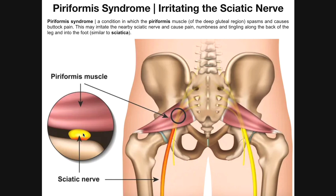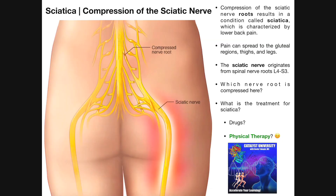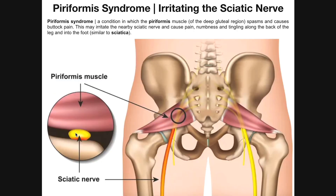Piriformis syndrome is something commonly seen in orthopedic outpatient physical therapy clinics. The sciatic nerve traverses between the bone of the pelvis and the piriformis muscle — it's very tight in there. Compressing this nerve produces pain, numbness, and tingling in the buttocks area. Just like sciatica, the pain from piriformis syndrome can radiate down into the thighs, legs, and even the foot. One of the common treatments is physical therapy; exercises to relax the piriformis muscle so that it doesn't compress the sciatic nerve.